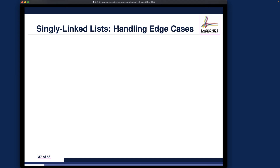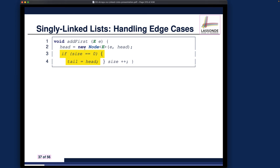There are certain cases for which we have to explicitly write conditional code to really address edge cases. For example, recall the add-first method: if we want to add the first node into the chain of nodes and the current size of the list is empty — before we add the new element — then after adding it, the new head and the new tail should really become the same node. This is an edge case we have to handle explicitly by writing specific code.